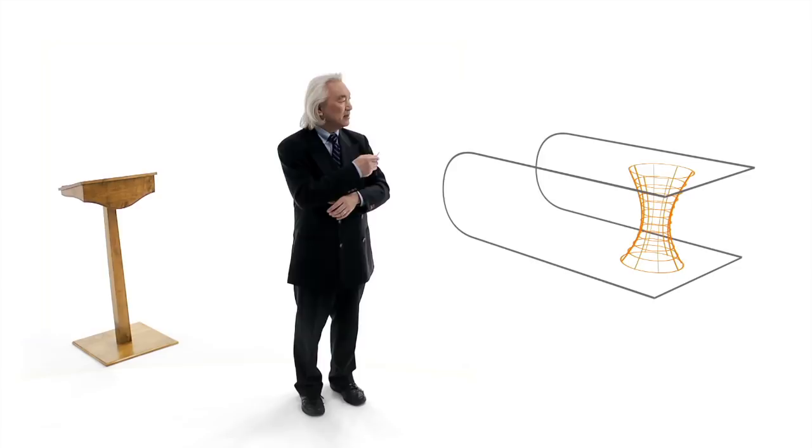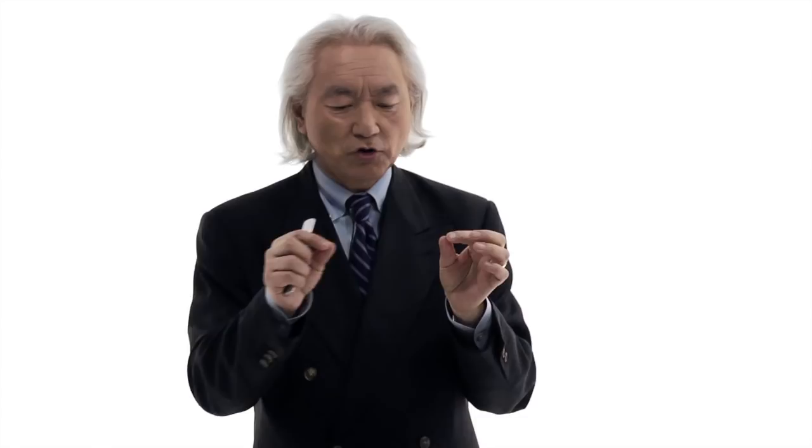This is a wormhole. Think of taking a sheet of paper and putting two dots on it. The shortest distance between two points is a straight line.